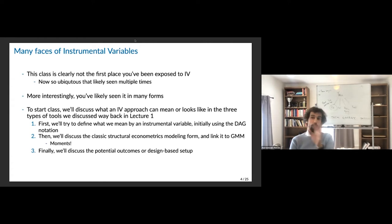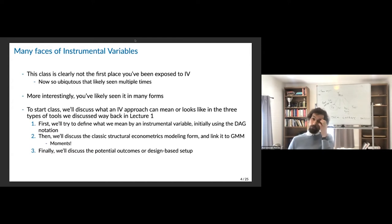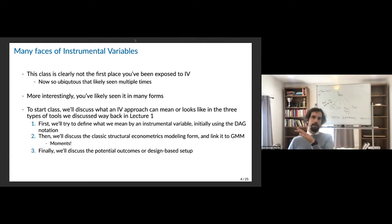Once we have this definition, we're going to use directed acyclic graph (DAG) notation because it's actually quite convenient. Then we'll move to the very classic structural econometrics modeling form — thinking about constant treatment effects in the traditional simultaneous equations form — linking it to GMM, so you can understand that IV is really providing moments that allow you to identify parameters. Then in the second half we'll talk about the potential outcomes, or design-based, setup, which is such a modern way of viewing it.